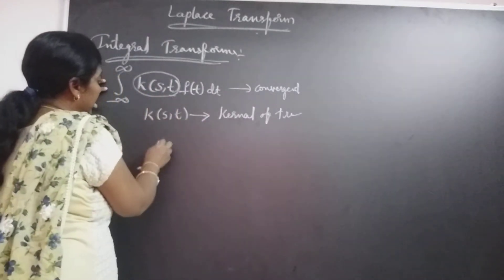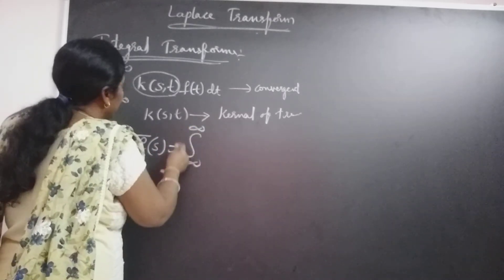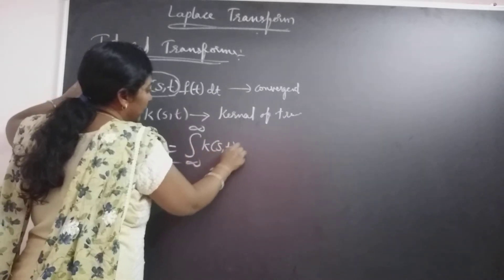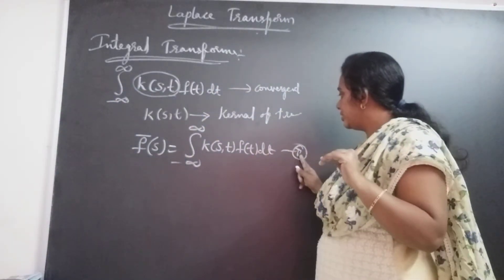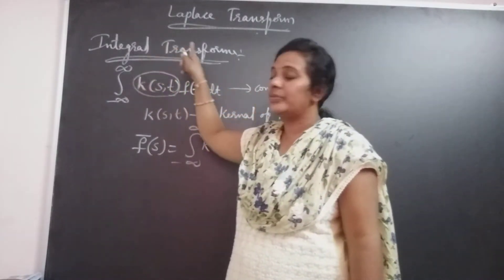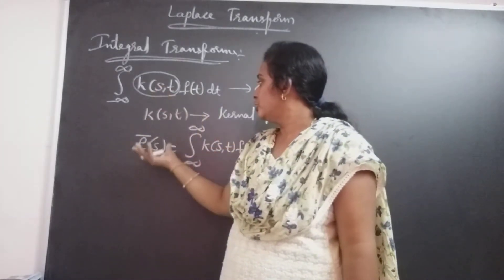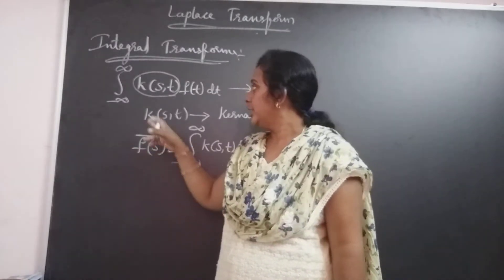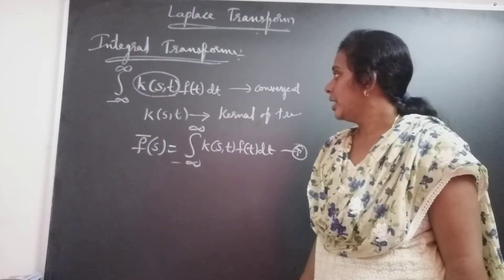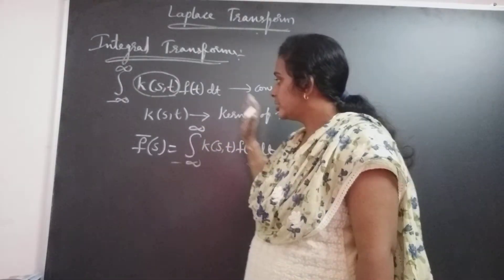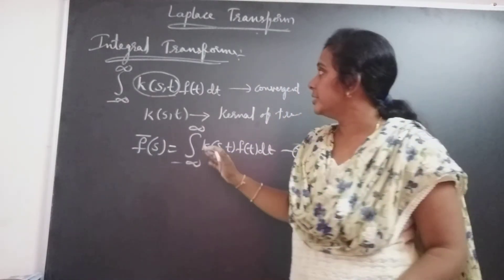This integral transform is denoted by F̄(S), that is equal to the integral from minus infinity to infinity of K(S, T) · F(T) dT. This is the integral transform — equation 1. The integral transform is defined for improper integrals; it must be convergent. That integral is denoted by F̄(S). K(S, T) is called the kernel of the transform, the kernel of the function of variables S and T. Here, F(T) is transformed to the S function, denoted by F̄(S).